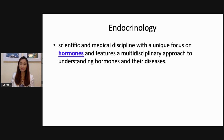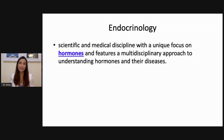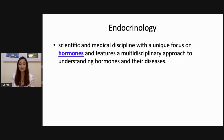Endocrinology is not as popular as cardiology or neurology because we don't have one discrete region in the body. Unlike cardiology, which has the heart and blood vessels, or neurology, which has the brain and nervous system, endocrinology has a unique focus on hormones and features a multidisciplinary approach. Endocrinology can overlap with the GI tract, nervous system, or muscles — we focus on hormones, not a single organ.